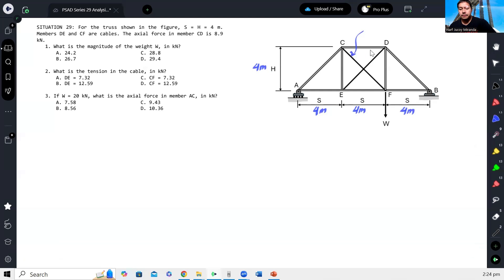In this problem, taken from November 2018 board exam, for the truss shown in the figure, S equals 4 and H equals 4, and members DE and CF are cables.